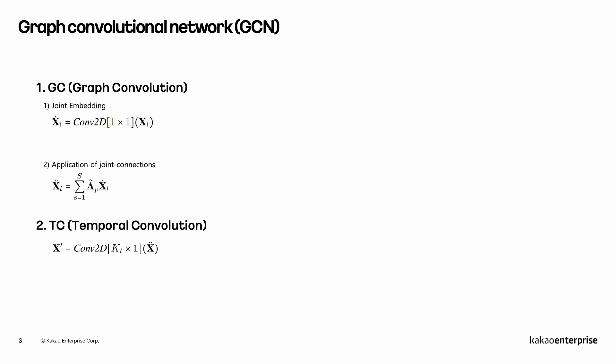Graph Convolutional Networks, mostly used in skeleton-based action recognition, consist of GCTC blocks that alternate between GC and TC. GC can be divided into two steps: feature embedding and application of joint connections.